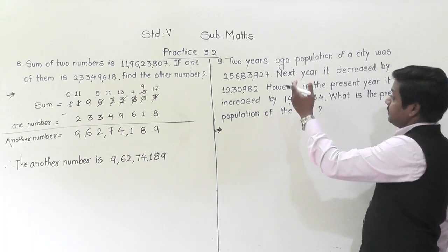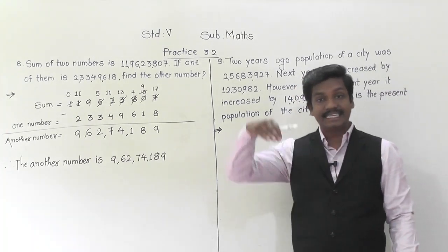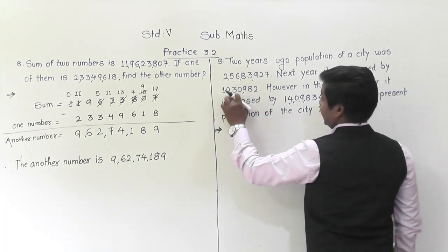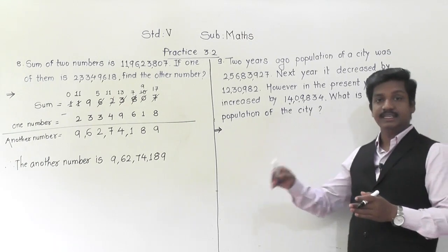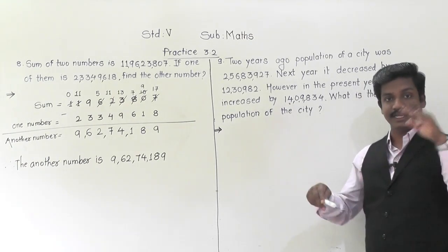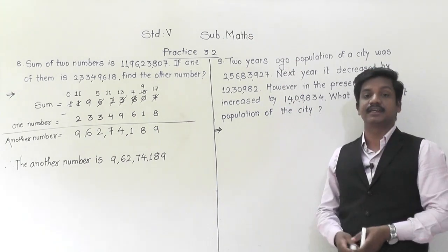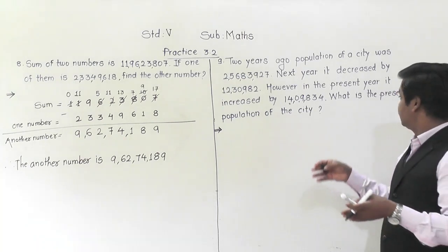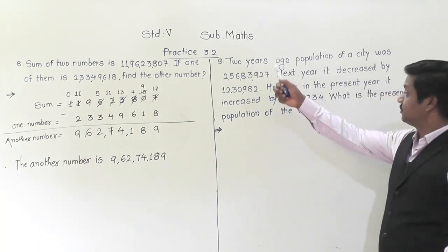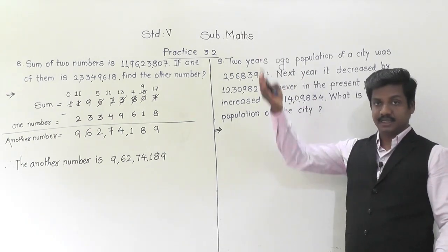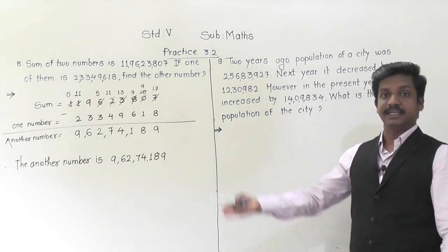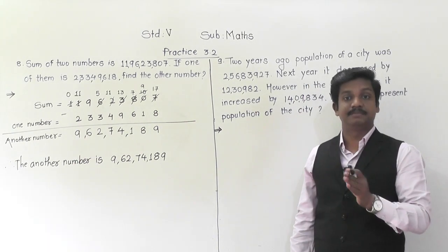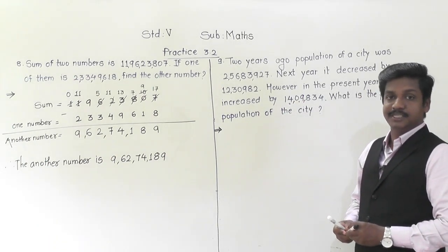The first population two years ago was 2,56,83,927. Next year it decreased — decrease means it became less, that means subtraction — by 12,30,982. In the present year it again increased — increase means addition — by 14,9,834. There are two operations here, so this is a problem of simplification. In simplification with two operations, which operation do we do first? Addition. We add the numbers with a plus sign first, and keep the subtraction for later.